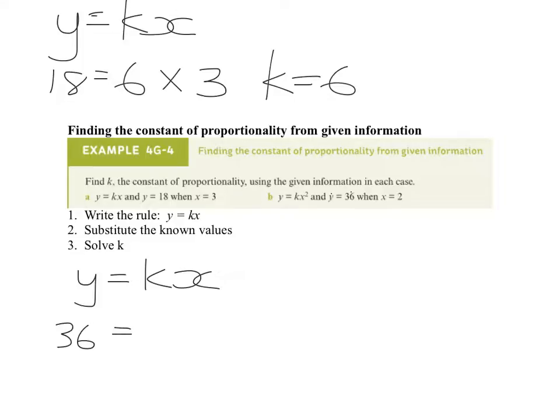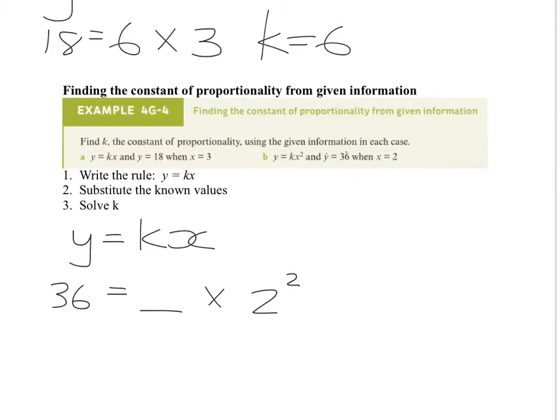They say that k is something, alright, is multiplied by x squared. So, we go 2 squared. So, what is 2 squared? 2 times 2, let's just move this up a little bit, is 4.